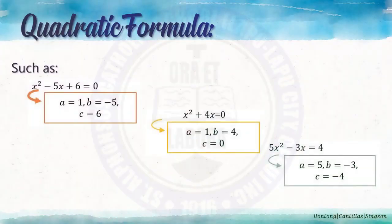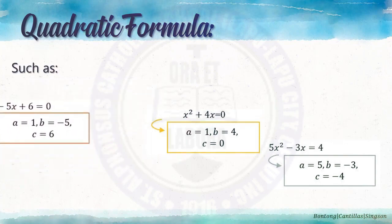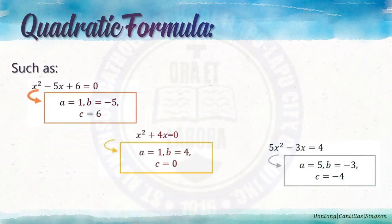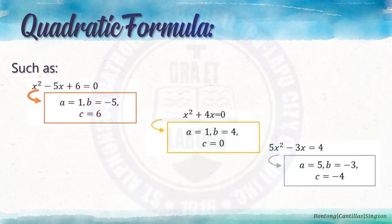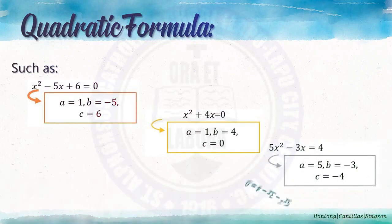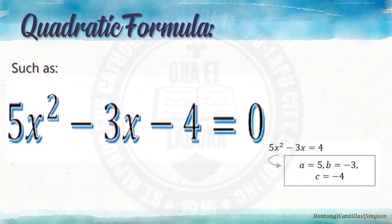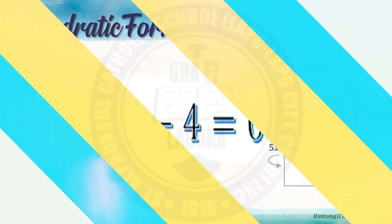It is important to determine the values of a, b, and c when solving a quadratic equation by quadratic formula. For example, in x squared minus 5x plus 6 equals 0, a is 1, b is negative 5, c is 6. For x squared plus 4x equals 0, a is 1, b is 4, c is 0. For 5x squared minus 3x equals 4, a is 5, b is negative 3, and c is negative 4, because the given is not yet in the general form.